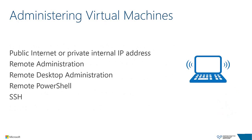Just as you have options for deploying software, you also have options for administering virtual machines. Connecting over the public internet is the simplest approach, but without additional steps your virtual machine is open to attack. Configuring an access control list on a remote management endpoint is a good method to secure it. Using a site-to-site or point-to-site network, you can remove all public endpoints and only connect via the internal IP address — a much more secure method. Windows-based Azure VMs have remote PowerShell and remote desktop enabled by default; Linux VMs use SSH with password or SSH key authentication.